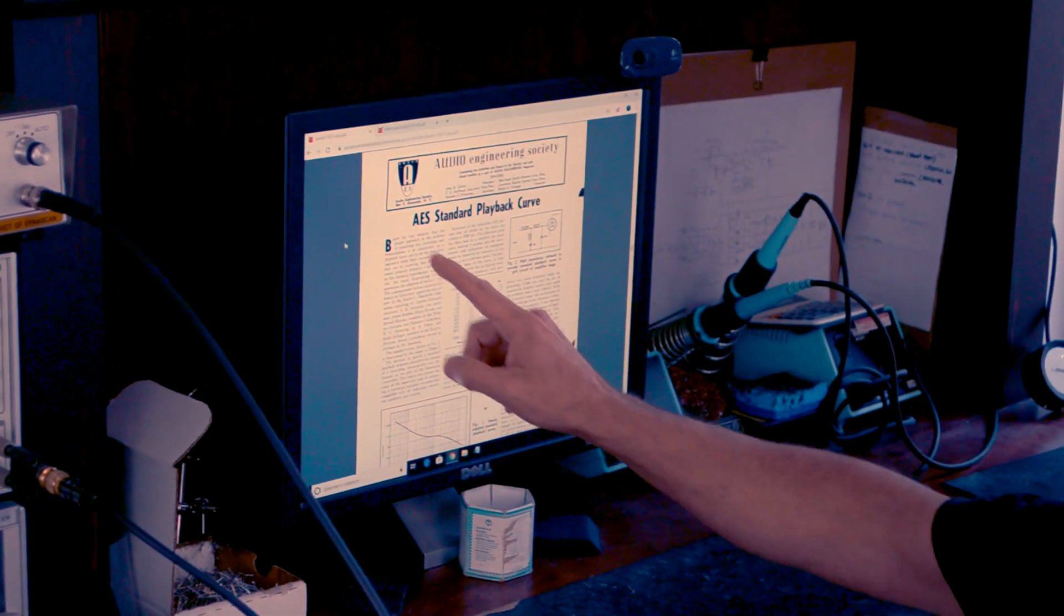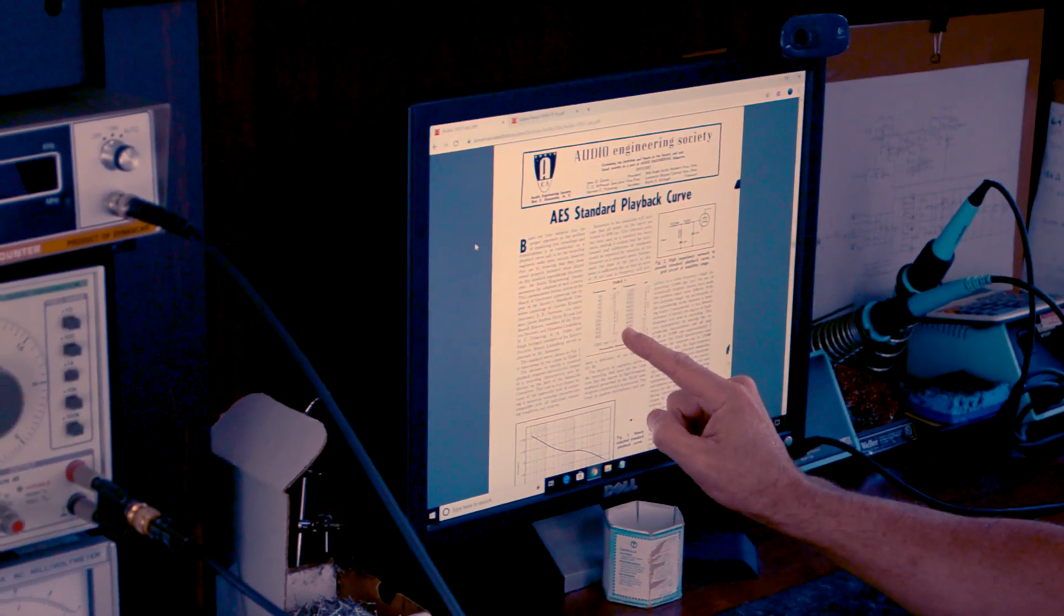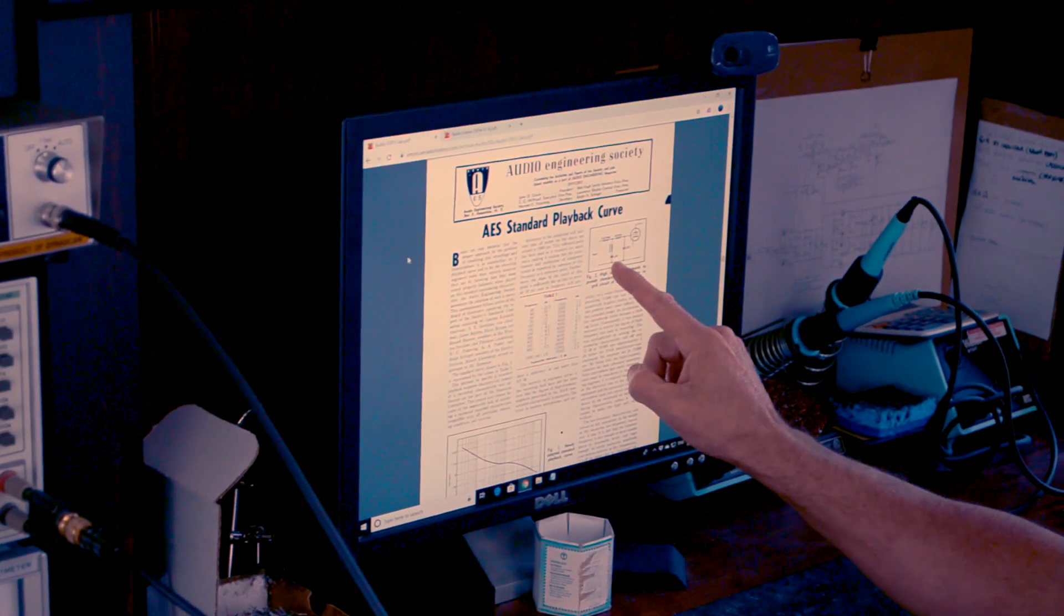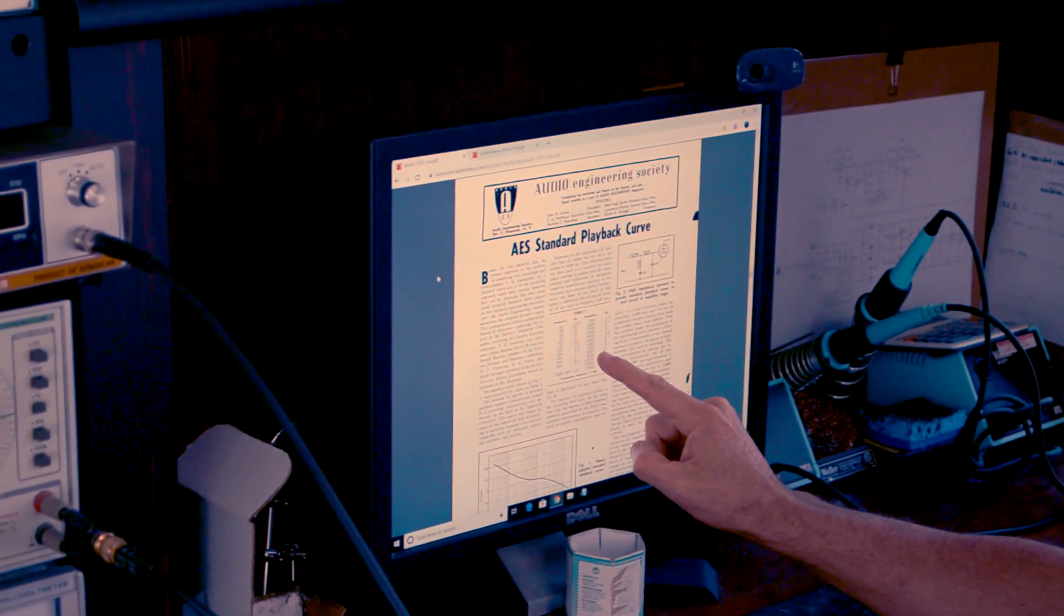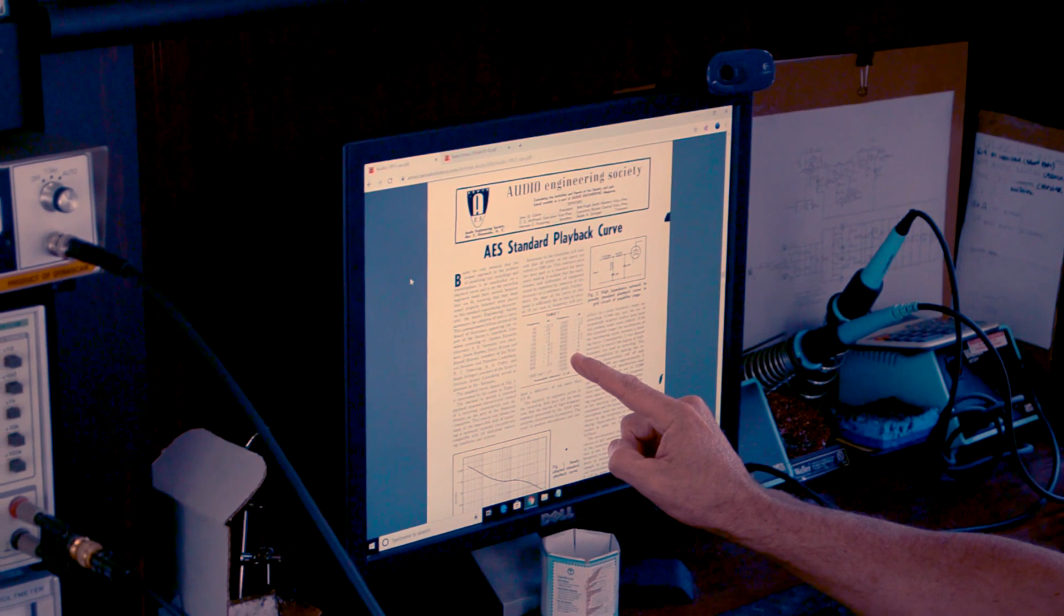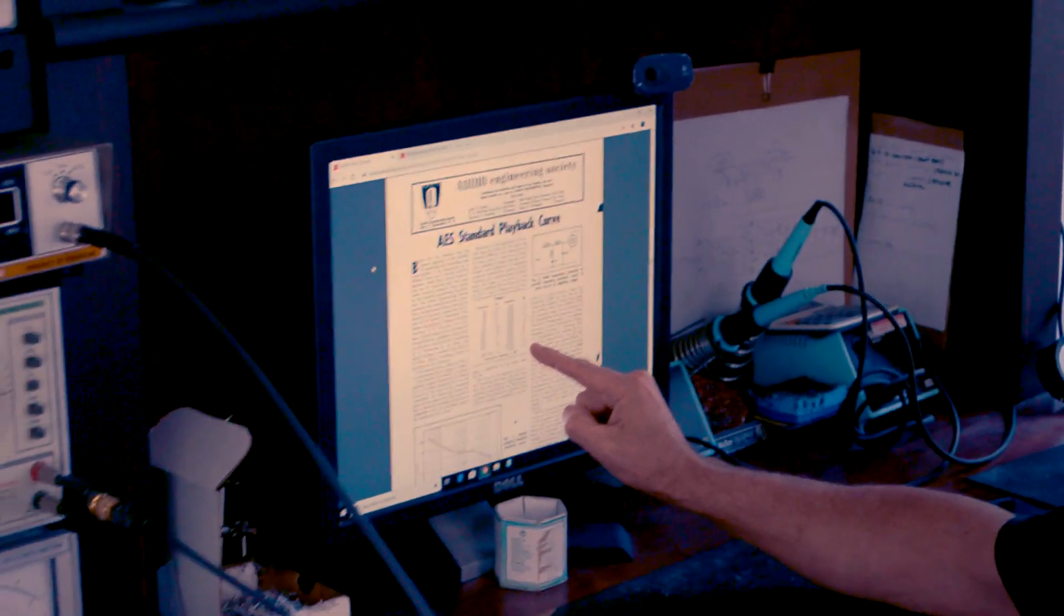So the Audio Engineering Society published a magazine called the Journal of Audio Engineering and they proposed a single curve for everybody to conform to, and that was in January of 1951. That's this article right here, AES Standard Playback Curve. They give the curve that they think everybody should be using, and here it is down here. They give you a little circuit here to use for a playback phono stage. This was all fine and everybody agreed that this should be the case, but making it a reality are two different things. So it took a number of years for this to soak in to everybody's consciousness.